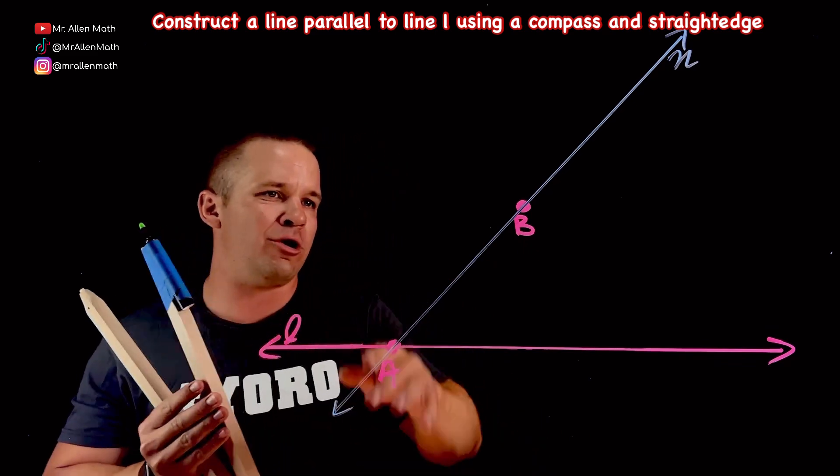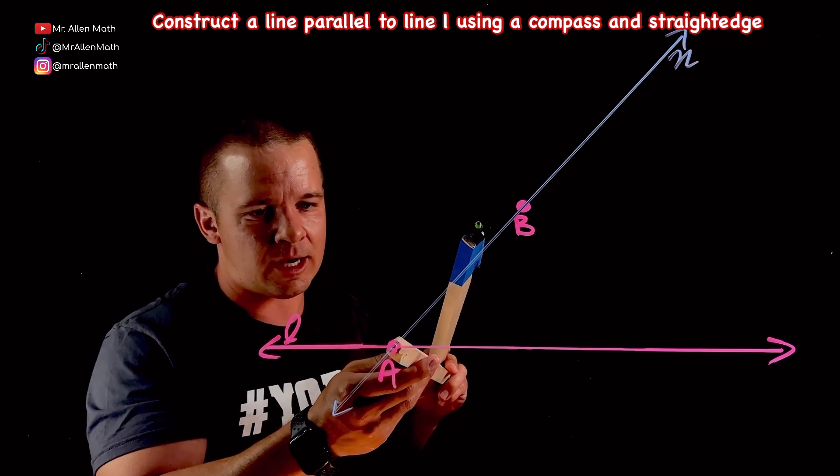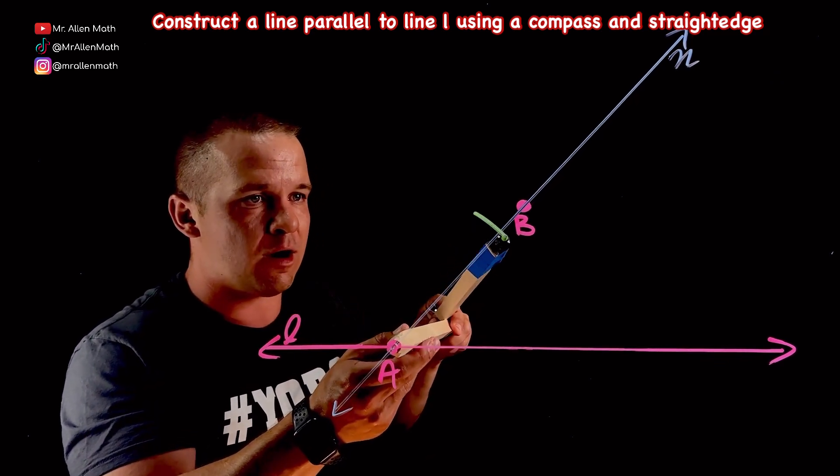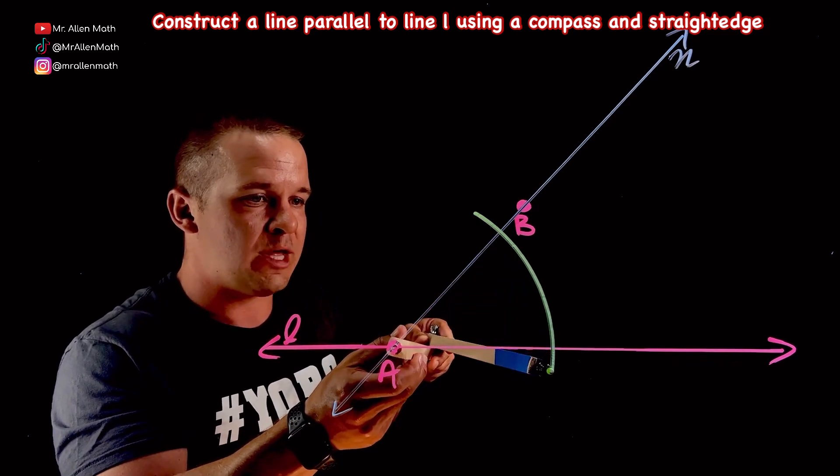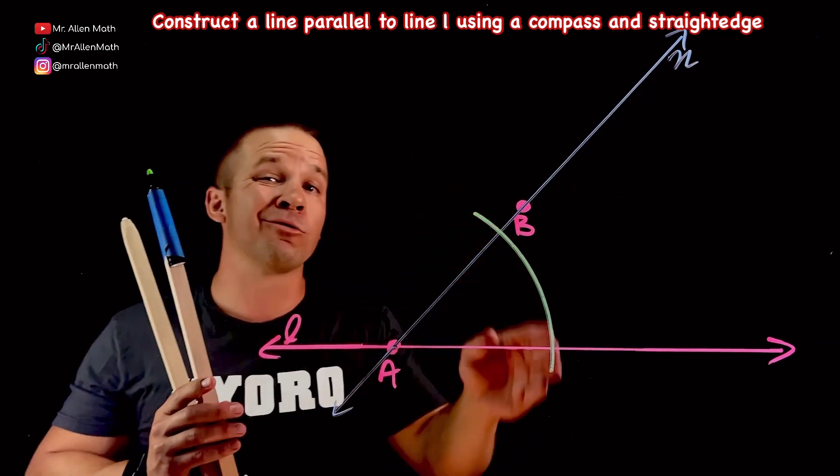So you could, honestly, use A, B, but I'll keep it a little less just to keep things out of the way. So I'm going to take my compass on that A, that point A there, and I'm going to just scribe an arc that'll pass through that new blue line N and through line L.